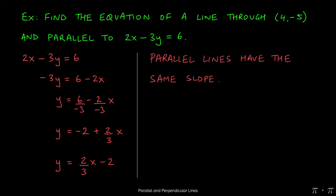This means that the slope of this line is 2 thirds, and because parallel lines have the same slope, the slope of the new line will be 2 thirds as well.